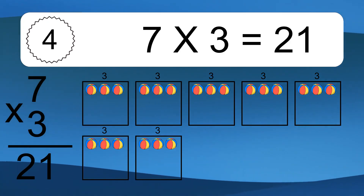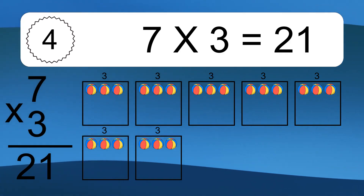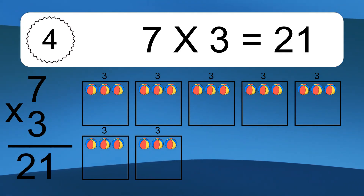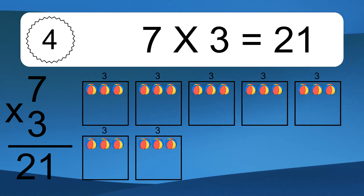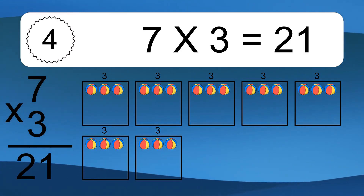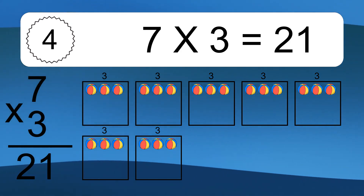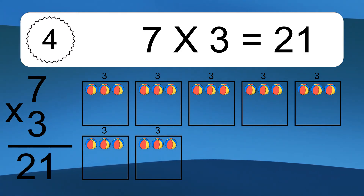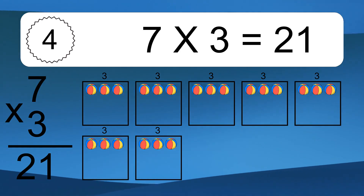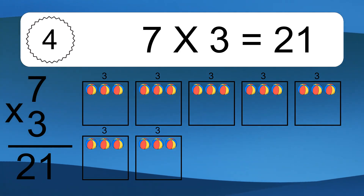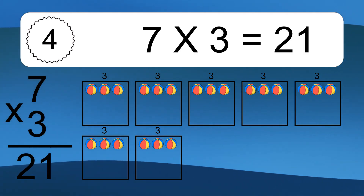We have 10 boxes, and each box has 3 colorful balls inside. If you count all the balls in all the boxes together, you will have 7 times 3 balls. This equals 21 balls.